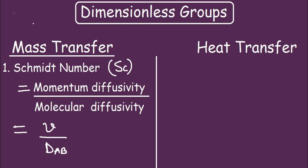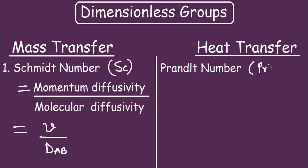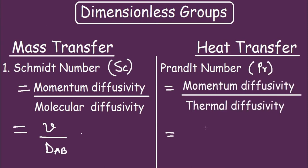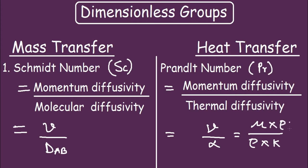The analogous number to Schmidt number in heat transfer is the Prandtl number, represented by Pr. It is the ratio of momentum diffusivity to thermal diffusivity. Expanding this, kinematic viscosity ν equals dynamic viscosity μ divided by density ρ, and thermal diffusivity α equals k divided by ρCp. After simplification, Prandtl number equals μCp divided by k, where k is thermal conductivity.